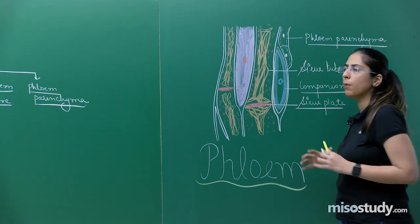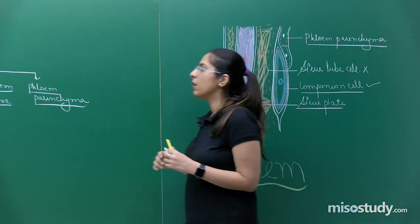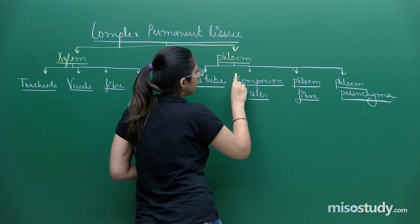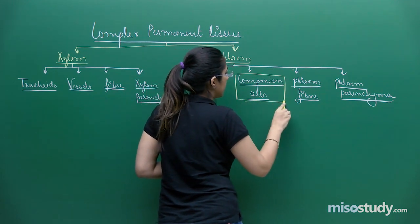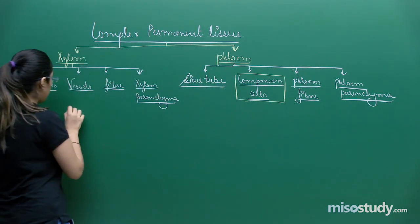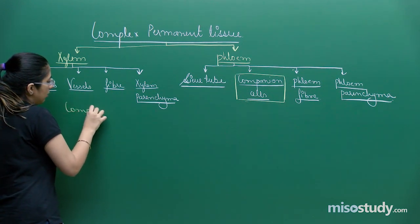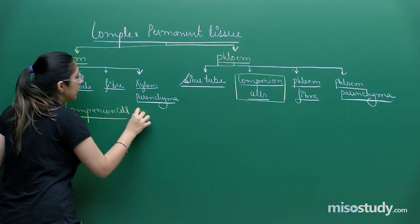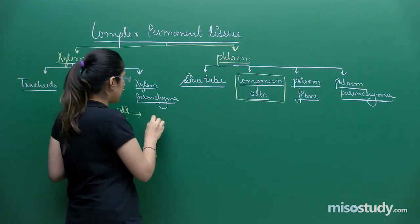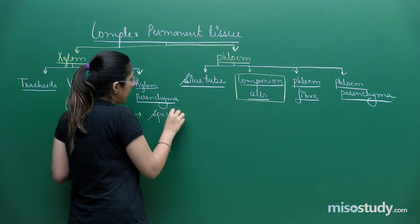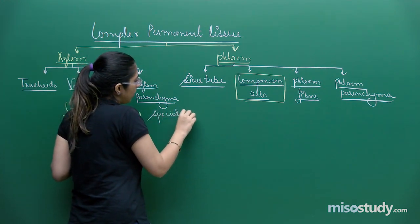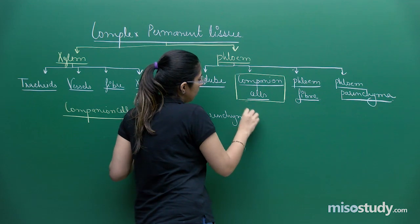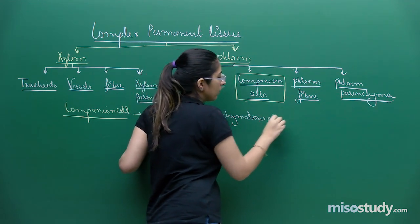Now let's discuss about companion cells in detail. Companion cells are specialized parenchymatous cells.